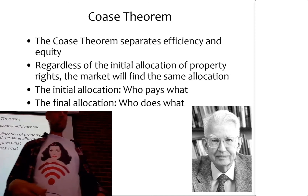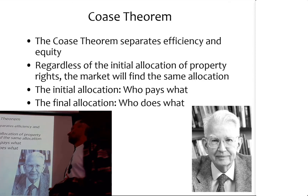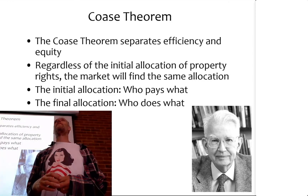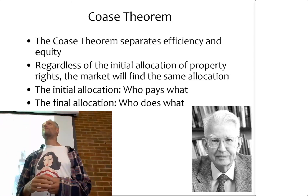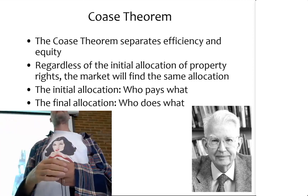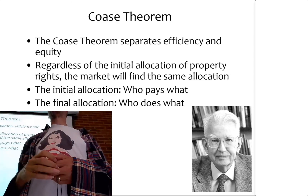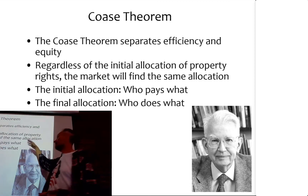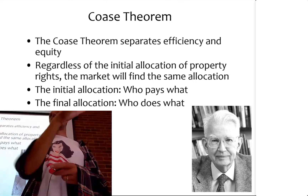This is Ronald Coase - was Ronald Coase. Regardless of the initial allocation of property rights, the market will find the same allocation in the end. Of course, the initial allocation does matter for the distribution of costs.